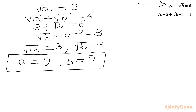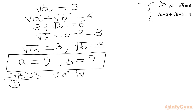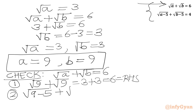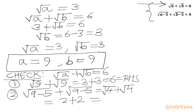So a equals 9 and b equals 9. Let's check. For equation 1: square root 9 plus square root 9 equals 3 plus 3 equals 6 — matches the right-hand side, so the first equation is true. For equation 2: square root (9 minus 5) plus square root (9 minus 5) equals square root 4 plus square root 4 equals 2 plus 2 equals 4 — LHS equals RHS, so our solution is confirmed correct.